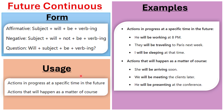Now let's look at examples of actions in progress at a specific time in the future. 'He will be working at 8 PM' — he's not working now, but at 8 PM in the future he will be continuously working. 'They will be traveling to Paris next week.' 'I'll be sleeping at that time' — for instance, if a friend asked to come at 1 AM tomorrow, I'd say I will be sleeping at that time.